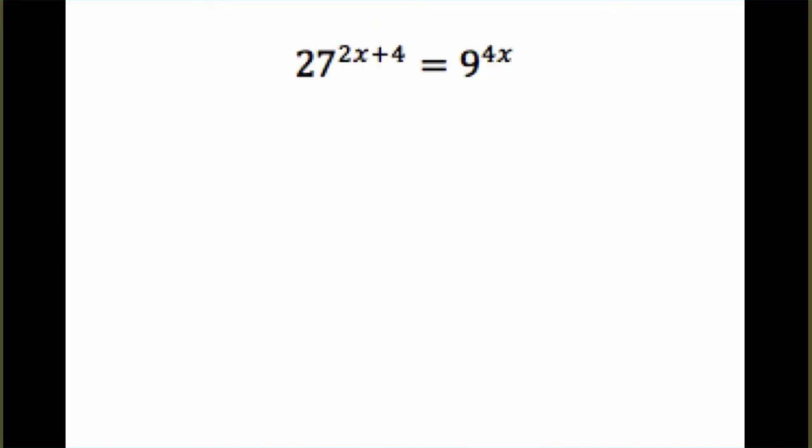Now, just one more example to look at. 27 to the 2x plus 4 equals 9 to the 4x. So try to think of a number that you could use as the base and come up with 27 and 9. So pause if you need to and play around with it.